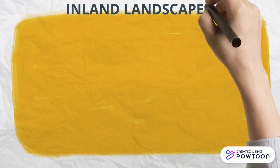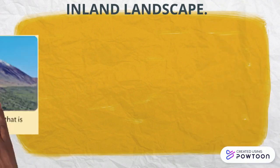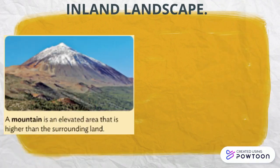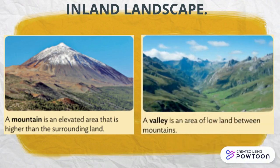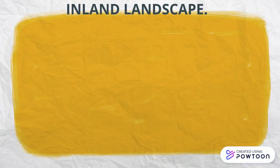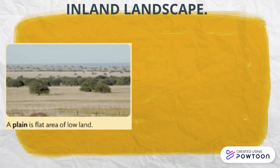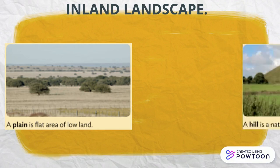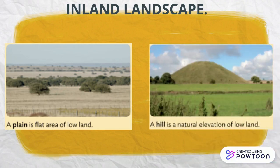Features in an inland landscape: a mountain is an elevated area that is higher than the surrounding land, and a valley is an area of low land between mountains. A plain is a flat area of low land, and a hill is a natural elevation of low land.